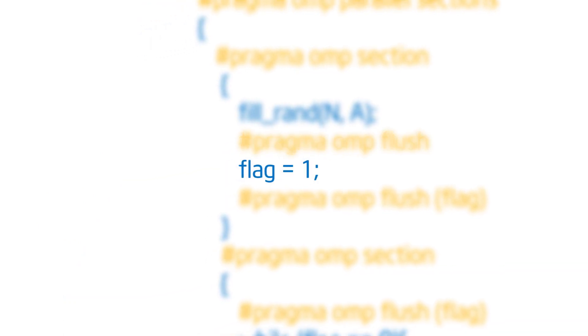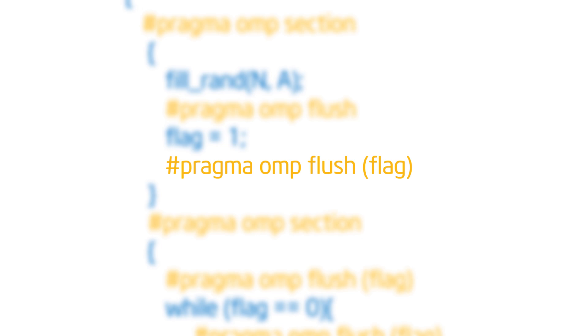Now I want to communicate the flag. The flag I'm going to use to tell anyone else interested, my consumer, that it's now time for you to grab A and do what you're going to do with it. So I set flag equals 1. Flag was a shared variable initialized to 0. Now I set it to 1, and now I flush pragma omp flush flag. And so that's my way of saying, now look at my flag. I'm going to make flag visible.